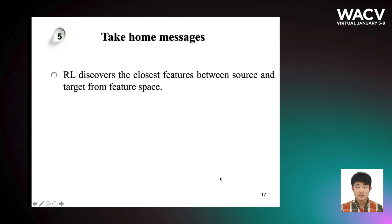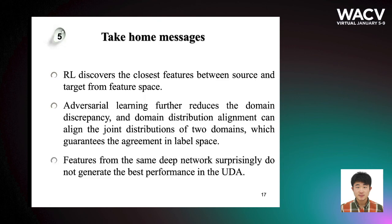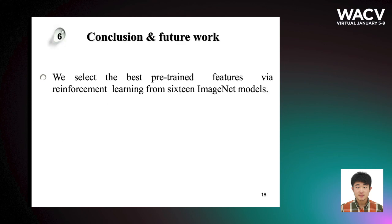There are several take-home messages. First of all, reinforcement learning discovers the closest features between source and target domain from feature space, and adversarial learning further reduces the domain discrepancies. Domain distribution alignment can align joint distribution of two domains, which guarantees the agreement in the label space. And features from the same different networks are surprisingly not generating the best performance in UDA.